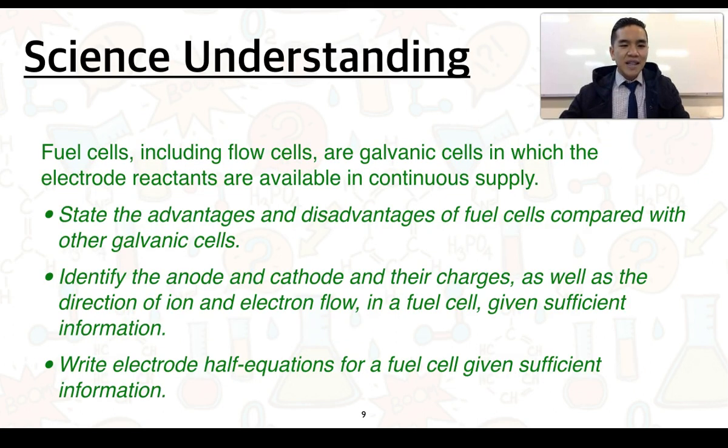This is a lead-in to the next science understanding. Fuel cells, including flow cells, are galvanic cells in which the electrode reactants are available in continuous supply. We need to be able to state the advantages and disadvantages of fuel cells compared with other galvanic cells. Identify the anode and cathode in their charges, as well as the direction of ion and electron flow in a fuel cell given sufficient information. Write electrode half equations for a fuel cell given sufficient information, and we'll go through some examples of this.